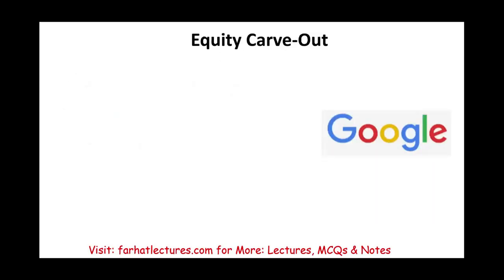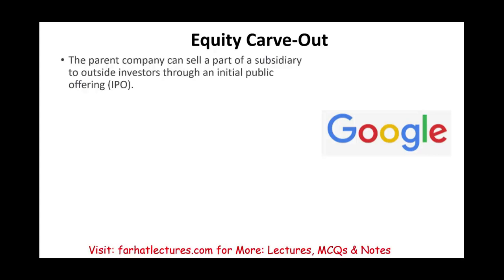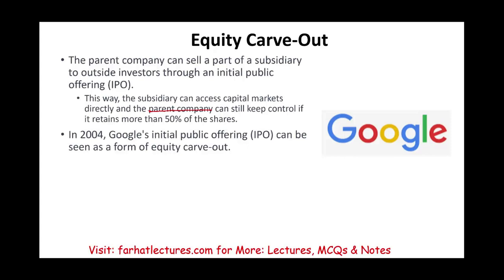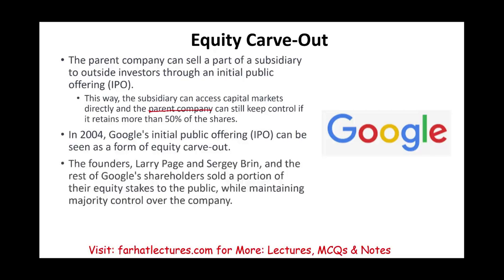An equity carve-out is another form of divestiture. The parent can sell part of the subsidiary to outside investors through an IPO. This way the subsidiary can access capital markets directly, and the parent company can still retain control if it keeps more than 50% of the shares. The classic example is Google. In 2004, Google's initial public offering can be seen as a form of equity carve-out. The founders Larry Page and Sergey Brin, along with the initial shareholders, sold a portion of their equity to the public.